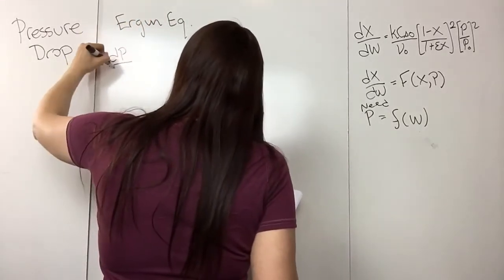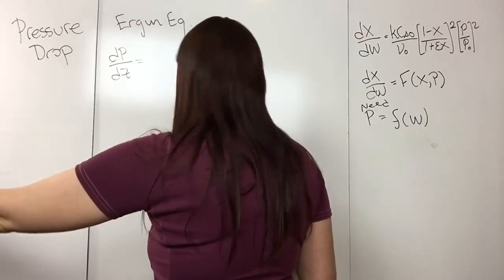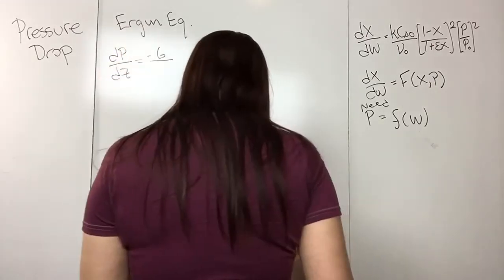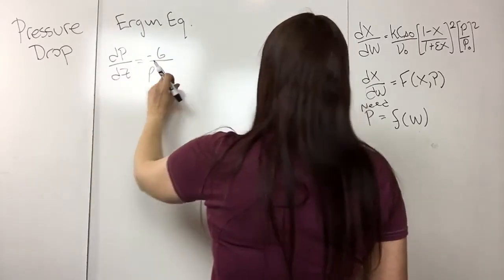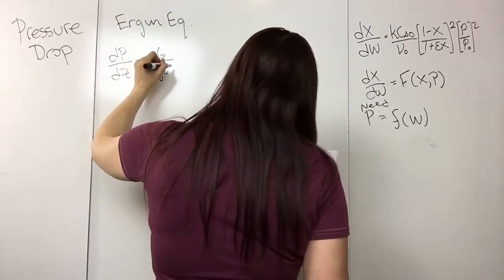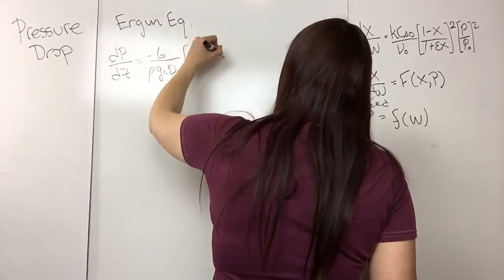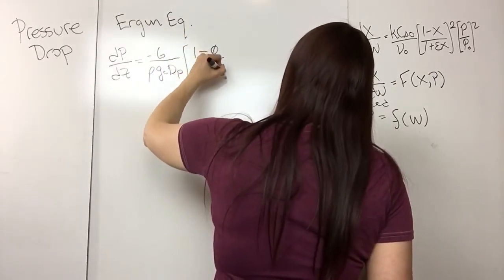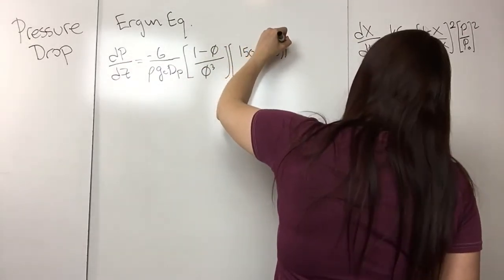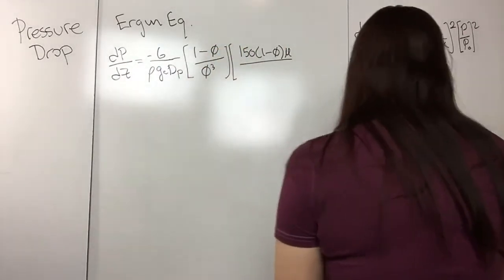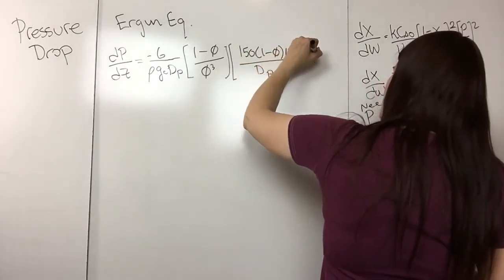The Ergun equation is dP/dz = −G/(ρ·gc·dP) · (1−φ)/φ³ · [150·(1−φ)·μ/dP + 1.75·G]. Here z is the length down the packed bed, G is the superficial mass velocity, ρ is the density of the gas, gc is a conversion factor, dP is the diameter of the particle, φ is the porosity, and μ is the viscosity of the gas in the bed.